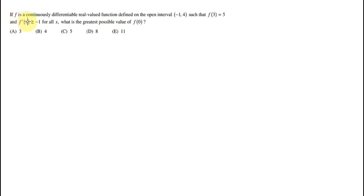If f is a continuously differentiable real valued function defined on the open interval (-1, 4) such that f(3) = 5 and the first derivative f'(x) = -1 for all x, what is the greatest possible value of f(0)?